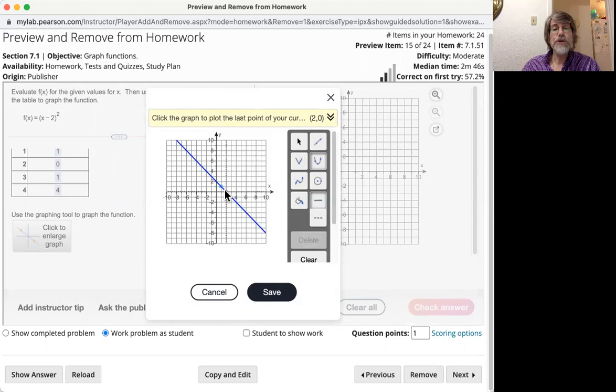Click on the (2,0) when you get there and then it says plot the last point. So, we're going to pick one more. It doesn't have to necessarily be the next one. So, just for variety I'm going to pick the point (4,4).